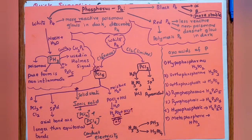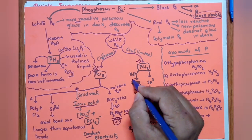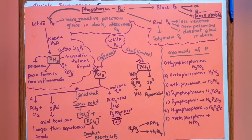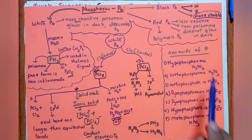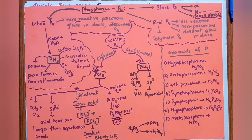When PCl5 is exposed to moisture, white fumes of HCl are formed. PCl3 with water forms H3PO3 and HCl — in both cases phosphorus maintains +3 oxidation state. PCl3 is sp3 hybridized with a pyramidal structure.